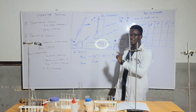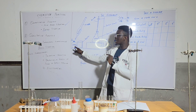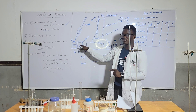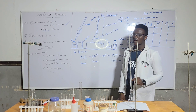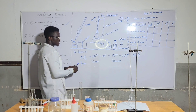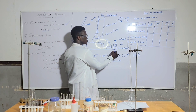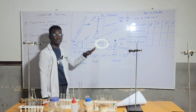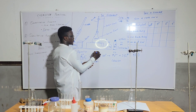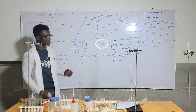KMnO4 goes in the burette while FeSO4 will be pipetted from the beaker and transferred into the conical flask. Technically, KMnO4 serves as an oxidizing agent — its oxidation state goes from +7 to +2, which means it undergoes reduction, and the one undergoing reduction is known as the oxidizing agent. FeSO4 goes from +2 to +3, which means it undergoes oxidation, making it the reducing agent.